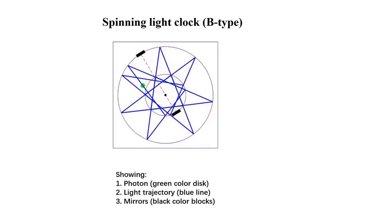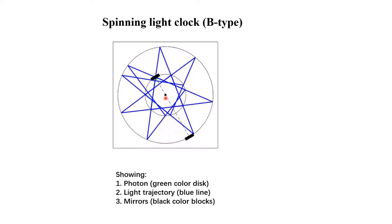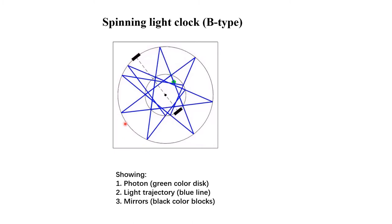This video shows another kind of spinning light clock, called the B-type spinning light clock. The two mirrors rotate around a common point called the center. The distances between the center and the two mirrors are not the same — they are different. One mirror moves along one circular trajectory, and the other mirror moves along a different circular trajectory. This pattern constructs a light clock, and we call it a B-type spinning light clock.